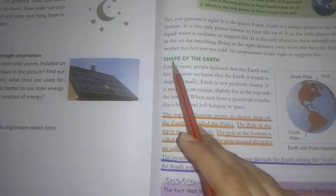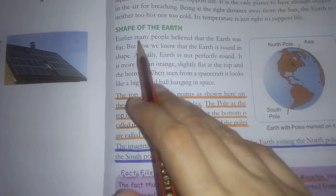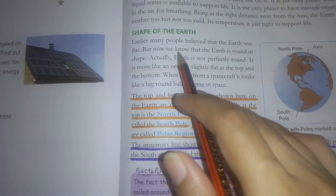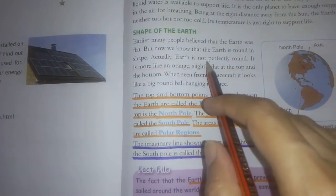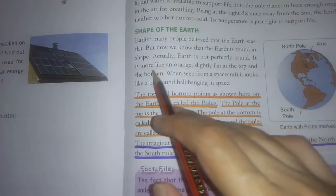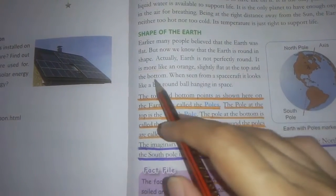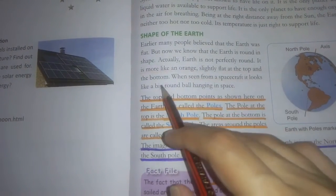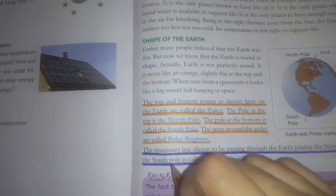Now, our first topic is shape of the earth. Earlier, many peoples believed that the earth was flat but now we know that the earth is round in shape. Actually, earth is not perfectly round. It is more like an orange, slightly flat at the top and the bottom. When seen from a spacecraft, it looks like a big round ball hanging in space.